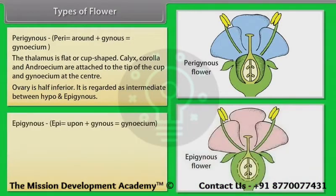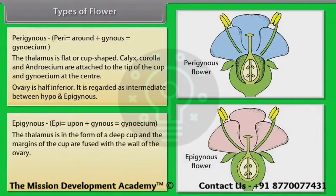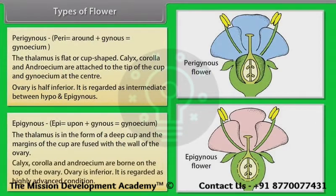In an Epigynous flower, the thalamus is in the form of a deep cup and the margins of the cup are fused with the wall of the ovary. Calyx, corolla and androecium are born on the top of the ovary. The ovary is inferior. It is regarded as a highly advanced condition.